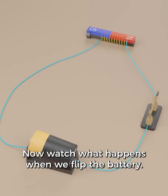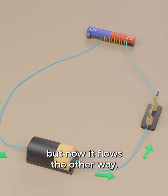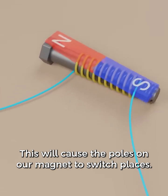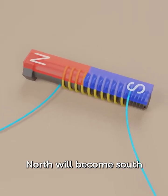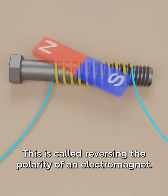Now watch what happens when we flip the battery. The electric current was flowing this way, but now it flows the other way. This will cause the poles on our magnet to switch places. North will become south, and south will become north. This is called reversing the polarity of an electromagnet.